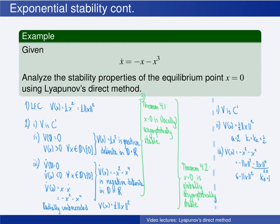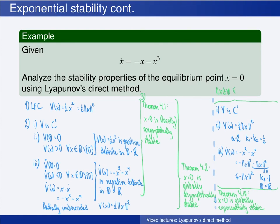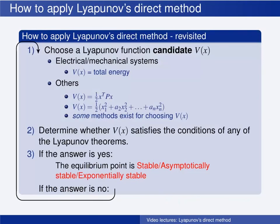All three conditions are satisfied in the whole state space. So by theorem 4.10, the origin is globally exponentially stable. We also have an upper bound on the solution: the norm of x(t) is less than or equal to k2 over k1 — which is 1 — times the norm of the initial value, times e raised to minus t.